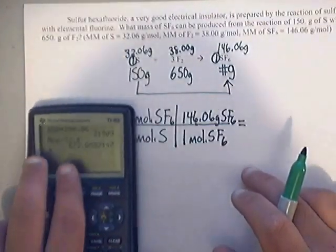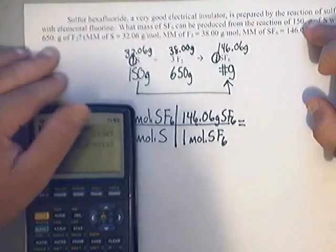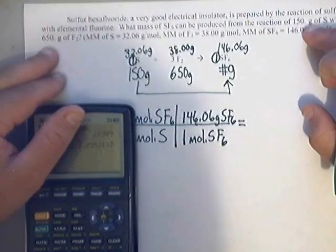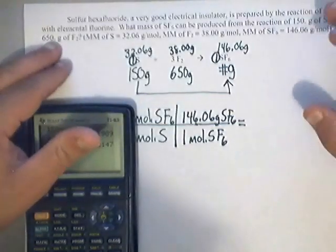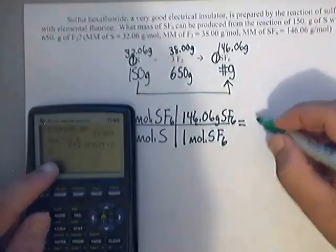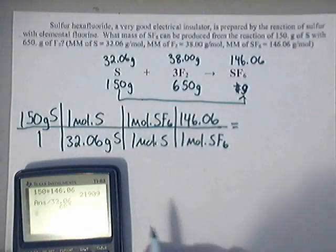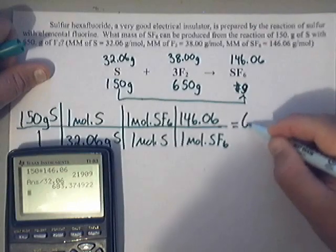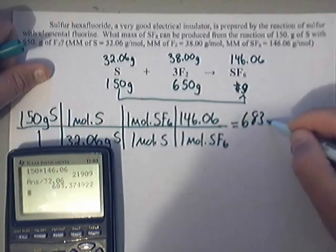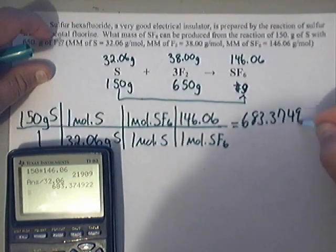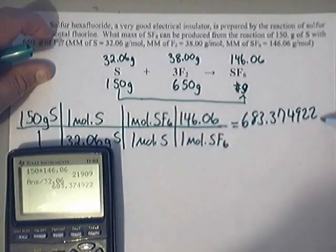Now for some reason in the problem they wanted us to use three sig figs. I don't know if you can tell it, but they put a little bitty point there and a little bitty point there. So the author of this problem wanted you to use three sig figs. We'll humor them and use them. So I end up getting, I don't think you can see it there, but I end up getting the following number: 683.374922 grams.